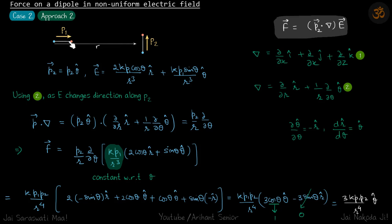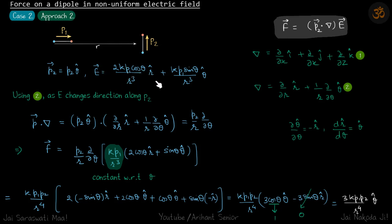Now Approach 2: this dipole is on the axial position of p1. As you move along the direction of p2, the direction of the electric field due to p1 changes, so we cannot use the Cartesian equation. We must use the polar form. We write both p and E in polar forms: p = p2 θ-cap, and E due to p1 = 2k·p1·cosθ / r³ r-cap + k·p1·sinθ / r³ θ-cap.